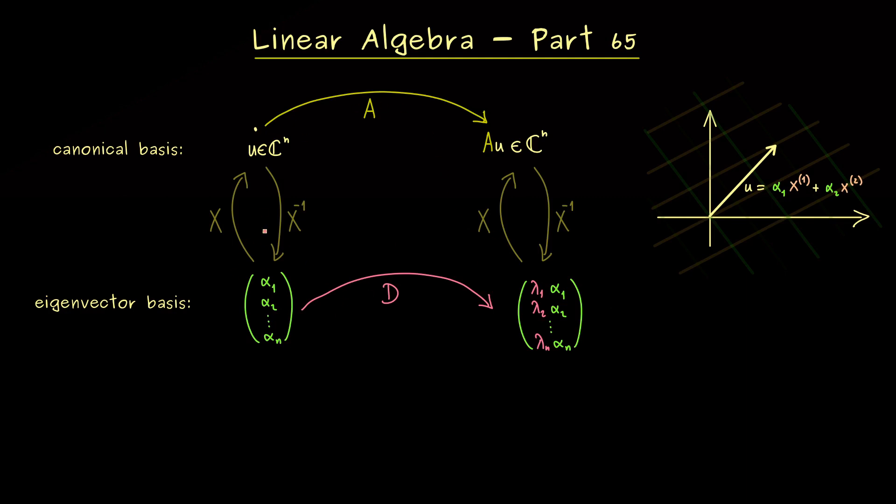So first you have the matrix X, then you multiply A from the left hand side and then you multiply X inverse from the left hand side as well. In fact, I can't stress it enough, this is a formula you definitely should remember for this course.